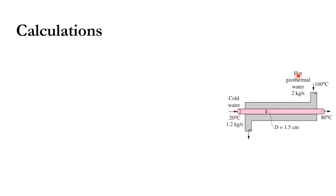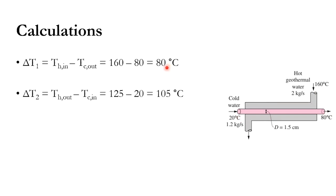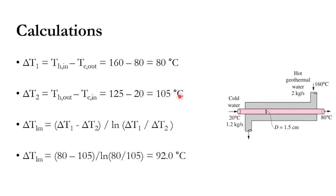In the schematic, cold water enters at 20°C and exits at 80°C, while geothermal water enters at 160°C and exits at 125°C. The tube diameter is 1.5 cm. Delta T1 = T_H,in − T_C,out = 160 − 80 = 80°C. Delta T2 = T_H,out − T_C,in = 125 − 20 = 105°C. The log mean temperature difference is calculated as 92°C.